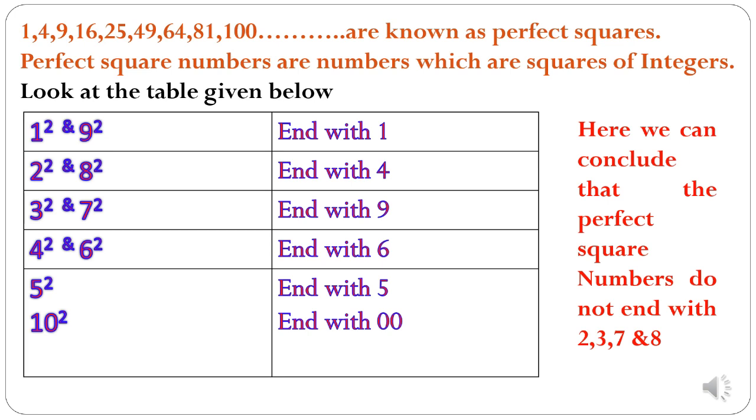Now look at the table given below. In the previous slide, we have shown the perfect squares from 1 to 10. Now you might have noticed that 1 square and 9 square end with 1, 2 square and 8 square end with 4, 3 square and 7 square end with 9, 4 square and 6 square end with 6, 5 square end with 5, and 10 square end with 00.